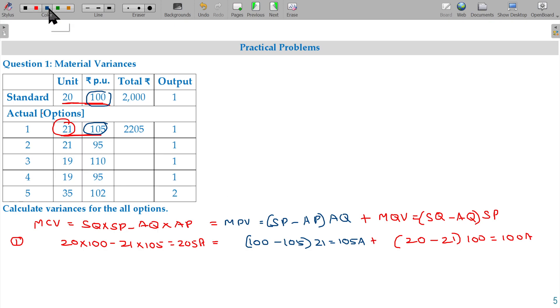So if you sum up the quantity adverse, price adverse, different different scenario for your better understanding. Let us now move on to the next one, option two. Option two level I have to take this one. Standard line the changes, 20 into 100.